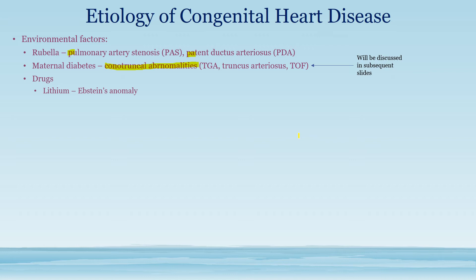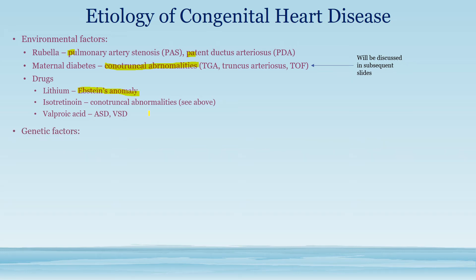Drugs can also cause congenital heart disease. Some specific associations you should know: lithium is associated with Ebstein's anomaly, known as atrialization of the right ventricle. Isotretinoin causes similar conotruncal abnormalities. Valproic acid can cause septal defects — important to know.